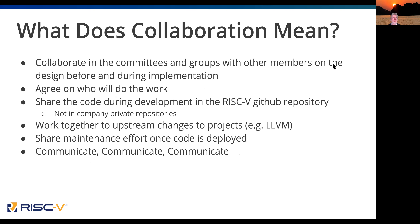Collaboration means we collaborate in committees to design the ISA and figure out what we're going to do with the ecosystem. We agree on the work, we share the code, and we try to get people to not keep it in their private repositories — to put it in the RISC-V repositories as early as possible so people can collaborate. If you're doing work in your private directory and somebody else is doing theirs separately, you're going to pay integration costs when they eventually come back together. We have to get things upstream for open source projects like LLVM or GCC. Once deployed, we get to share the maintenance effort.